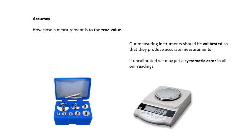Our measuring instruments should be calibrated so that they should produce accurate measurements. To calibrate a scale you would put 100 grams on it, exactly 100 grams and you would see if it reads exactly 100 grams. If it doesn't then there may be a way of twiddling a knob or something so that it does read 100 grams.